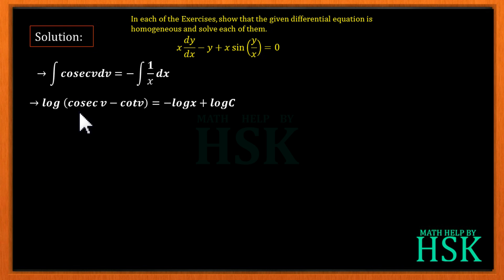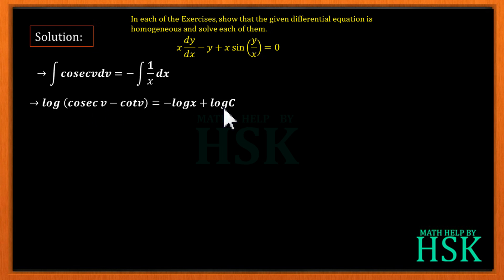The integral of cosec(v) is log|cosec(v) minus cot(v)|, and the integral of 1/x is log(x). So we have log|cosec(v) minus cot(v)| = minus log(x) plus log(c), where the integral constant is taken as log(c) since all terms are in logarithmic form. The right-hand side simplifies to log(c/x).